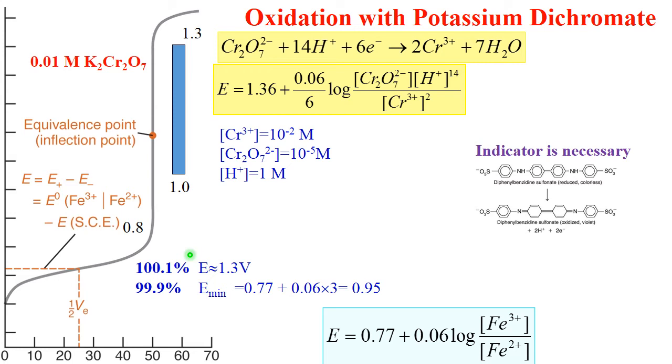A very common indicator is shown here, diphenyl benzidine sulfonate, which is colorless, changed color to oxidized form, which is violet.